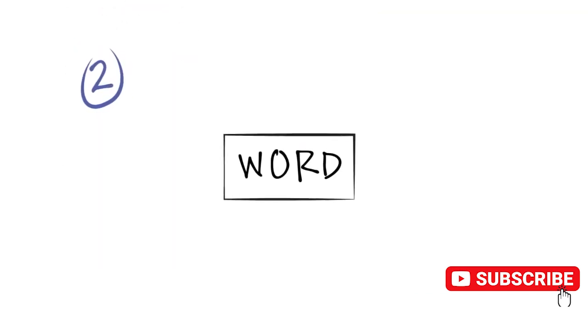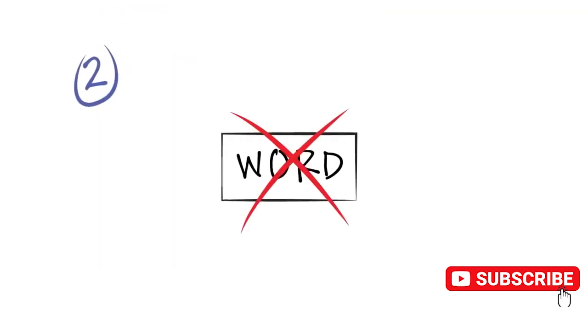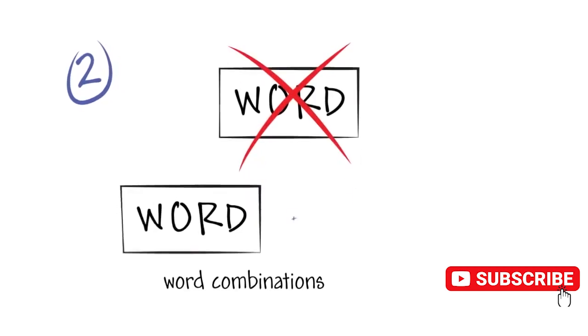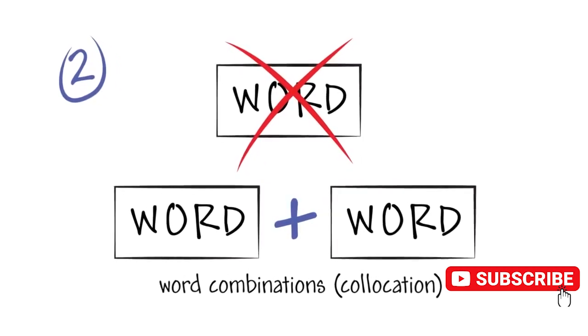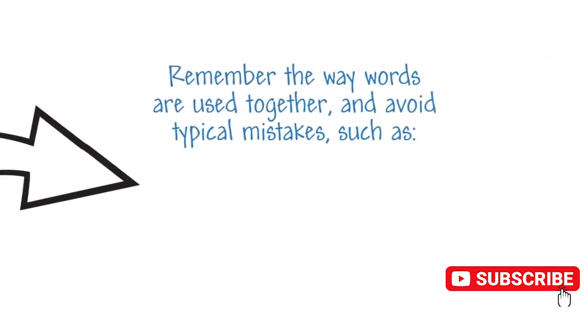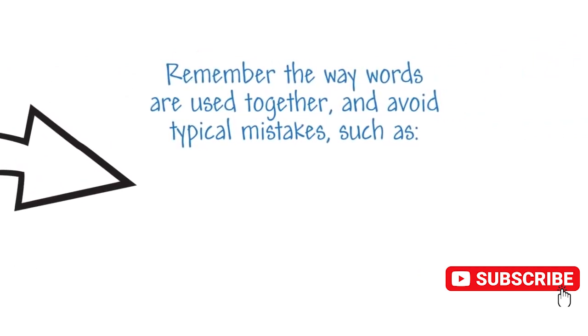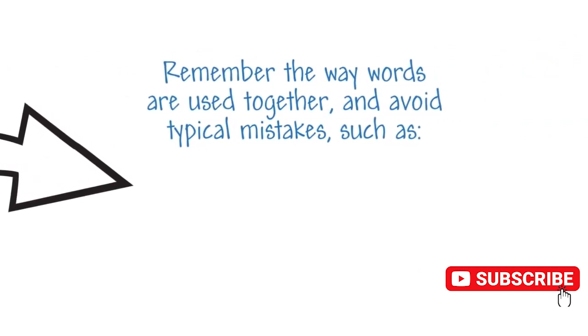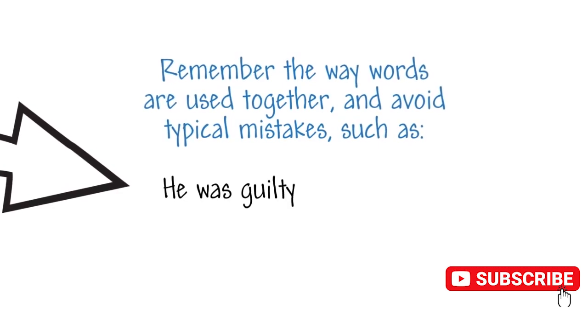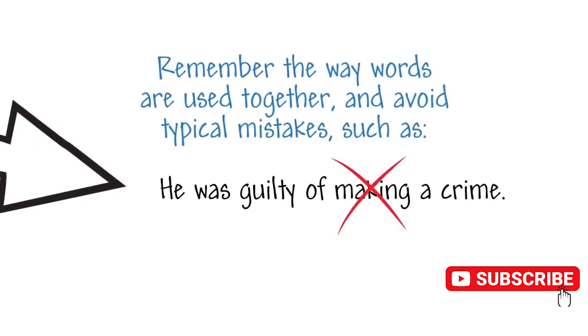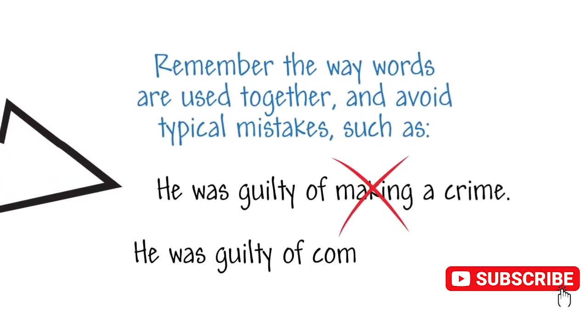Two: Also, when you are learning vocabulary, don't learn one word at a time. Learn word combinations or collocation. Remember the way words are used together and avoid typical mistakes such as 'He was guilty of making a crime.' The correct form is: He was guilty of committing a crime.